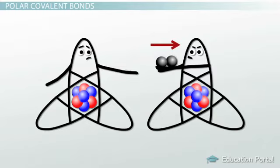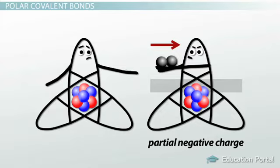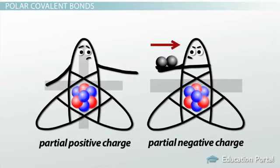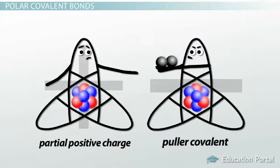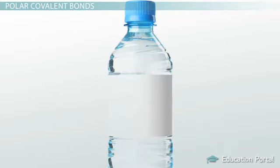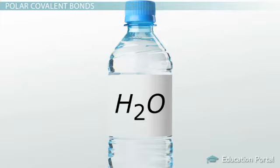Remember that electrons carry a negative charge. When electrons spend more time with one atom, it causes that atom to carry a partial negative charge, while the atom that spends less time with electrons carries a partial positive charge. A helpful way to remember polar covalent bonds is that one atom has more pull on electrons than the other. Your life actually depends on polar covalent bonding — water (H₂O) is an example, where the oxygen atom spends more time with electrons than the hydrogen atoms, giving oxygen a partial negative charge.